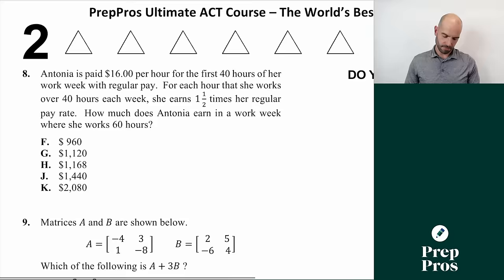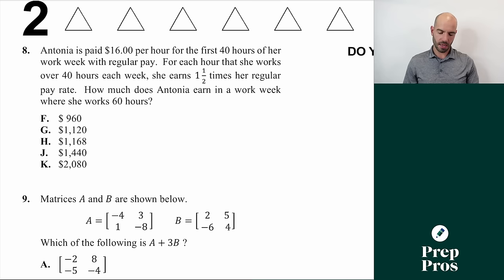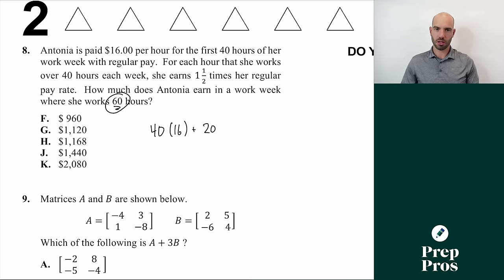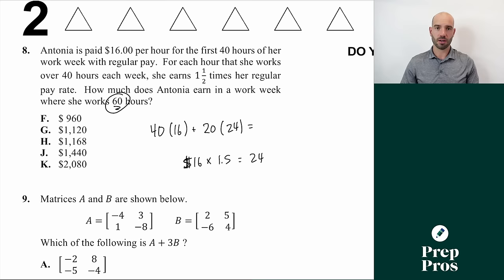Number eight: Antonia is paid $16 per hour for the first 40 hours, then 1.5 times her regular rate for each hour over 40. She works 60 hours total, so 20 hours of overtime. Her overtime rate is 16 times 1.5 equals $24 per hour. Total pay: 40 times $16 plus 20 times $24 equals $640 plus $480, which is $1,120. The answer is G.